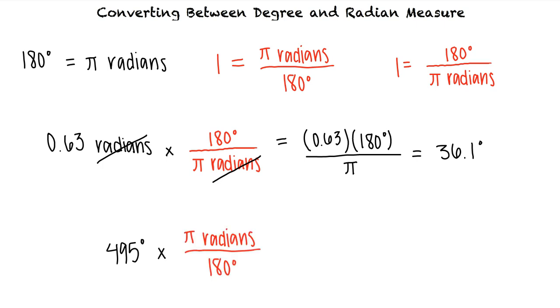Our degrees cancel out, and when we simplify, we see that 495 degrees is equal to 11 pi over 4 radians.